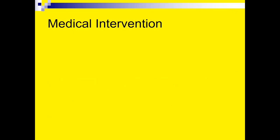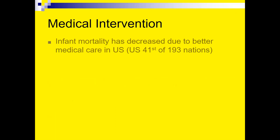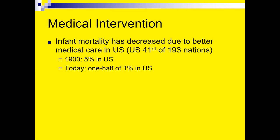Infant mortality — the death of infants — has decreased due to better medical care in the US. However, the US ranks only 41st out of 193 nations that track this. In 1900, 5% of babies died at birth — one in twenty. Today it's down to about half a percent — a tremendous improvement, even if not the best in the world.